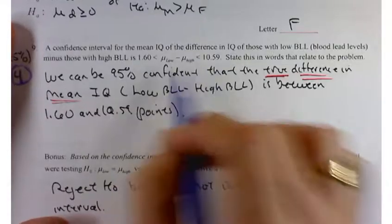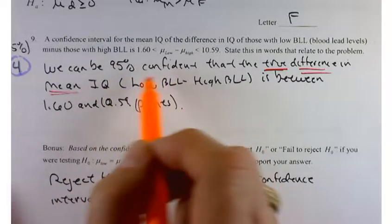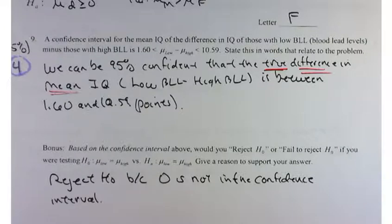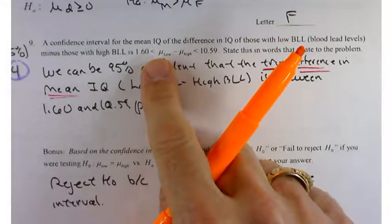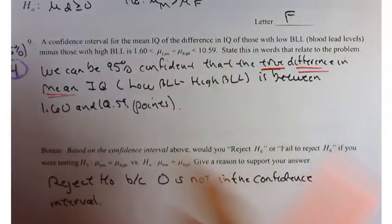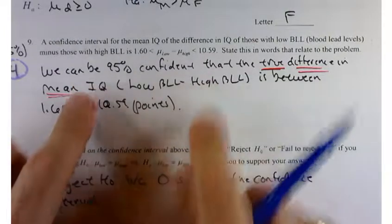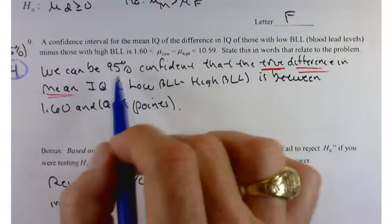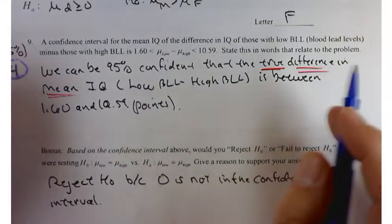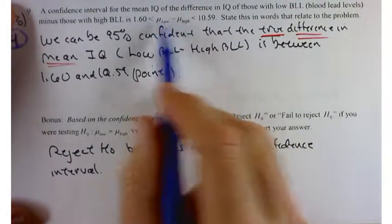I gave you the confidence interval for the difference in IQ of those with lead levels and those without. One thing that you guys have been really good about this semester is not using the word probability. Probabilities don't have any place in discussing result of a confidence interval. If you really wanted to mention it in terms of probability, it's either a zero or a one. The confidence interval contains your population parameter or it doesn't. We don't know which.